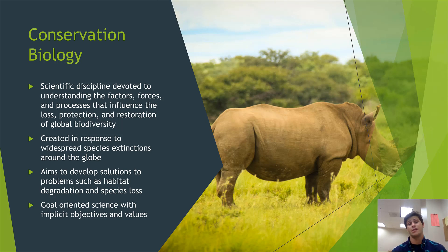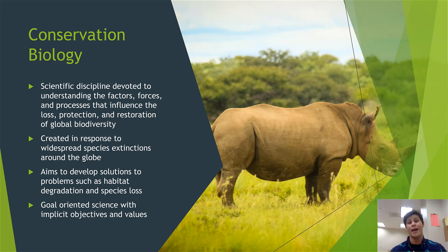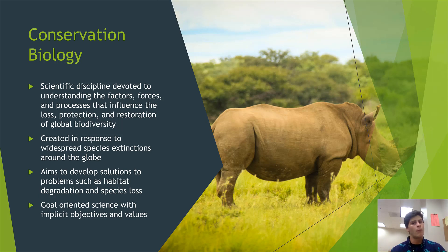Unlike most branches of science, conservation biology is science with a goal and a specific aim. Typically branches of science want to understand the natural world around us to increase our understanding — education and knowledge for the sake of education and knowledge. Conservation biology is a little bit different. It has specific goals and aims: to understand the causes of biodiversity loss and figure out ways to remedy or reduce these causes so that we don't see continued precipitous declines in species diversity. While most branches of science simply want to understand everything, conservation biology wants to understand the natural world for the explicit aim of preserving what biodiversity we actually have left.